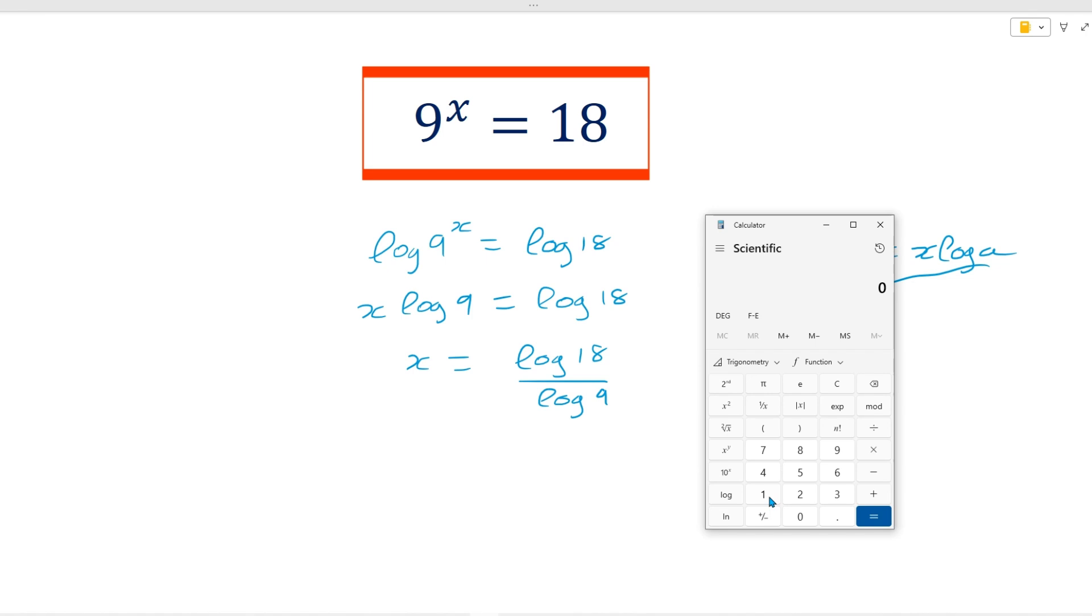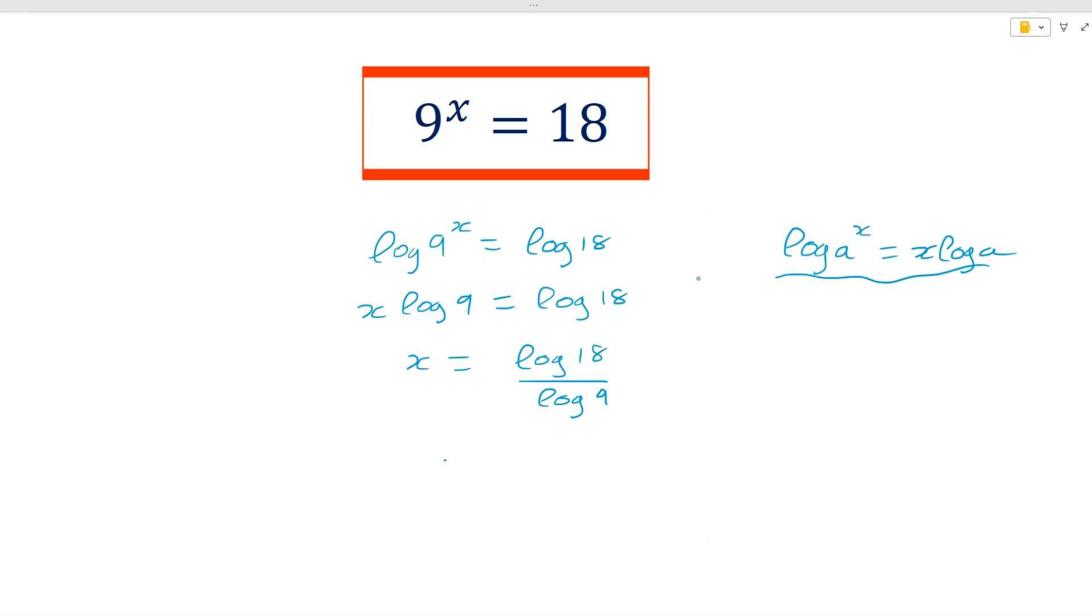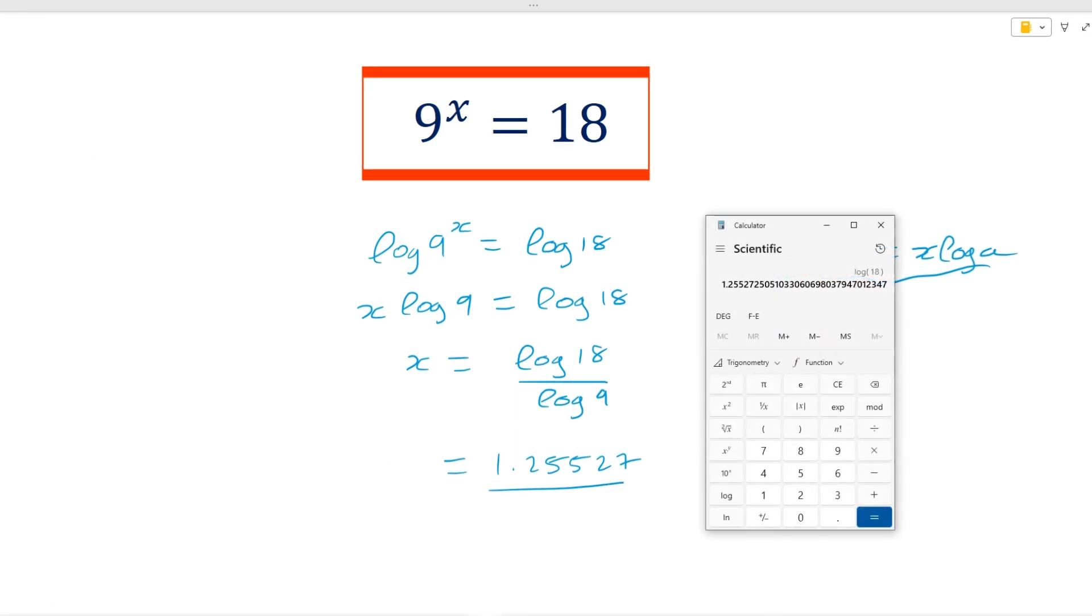So using our calculator here, we can figure out the log of 18, which we can do. This here is 1.25527, so I'm going to have to keep those values over 1.25527 divided by the log of 9, which is 0.95424.